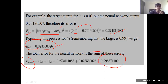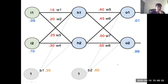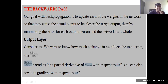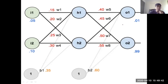Phase three begins: we back-propagate the total error to update all weights — first between hidden and output, then between input and hidden. In the backward phase, we take the example of updating weight w5. We cannot update input-to-hidden weights directly; we must first update the output-to-hidden weights. That is where the chain rule comes into play.